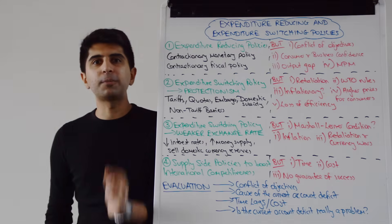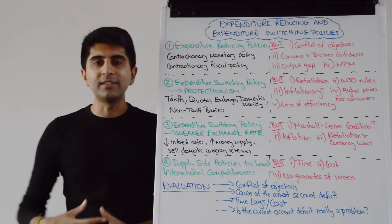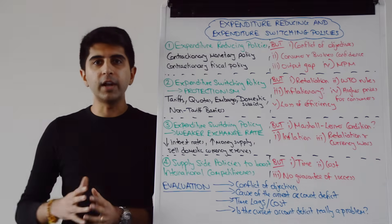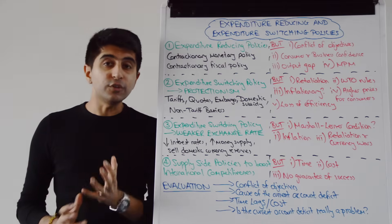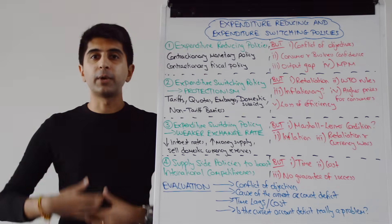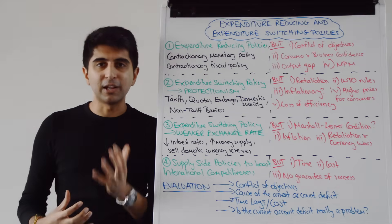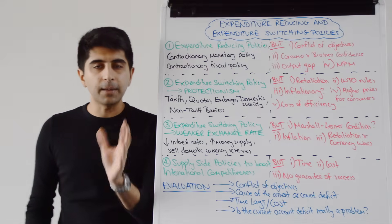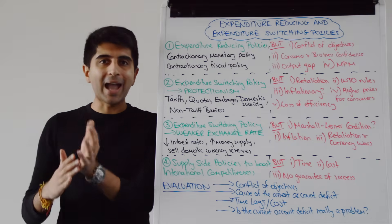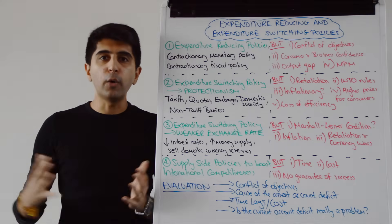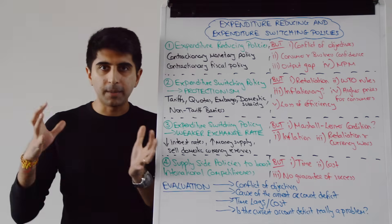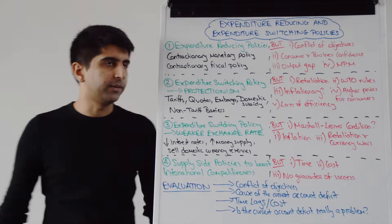Let's start by looking at expenditure reducing policies. These are policies to reduce the amount of spending on imports in the economy. The way these policies work is to reduce aggregate demand, reduce incomes in the economy, and therefore reduce the marginal propensity to import — remembering that when consumers are richer in an economy, they tend to spend a lot of money on imports. Contractionary monetary and fiscal policies shift aggregate demand to the left, making incomes lower and thus reducing import expenditure, helping to close the trade deficit and the current account deficit.